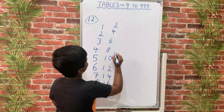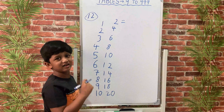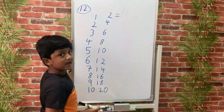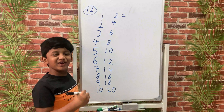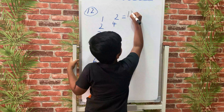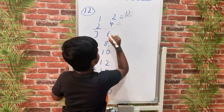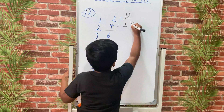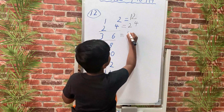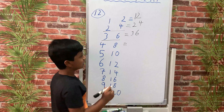Here comes the trick. We will write the numbers together to get our 12th table. We will write these 2 numbers together. If we write 1 and 2 together, we will get 12. Then we will write 2 and 4 together, which gives us 24. And then we will write 3 and 6 together to get 36. And then 4 and 8 together to get 48.